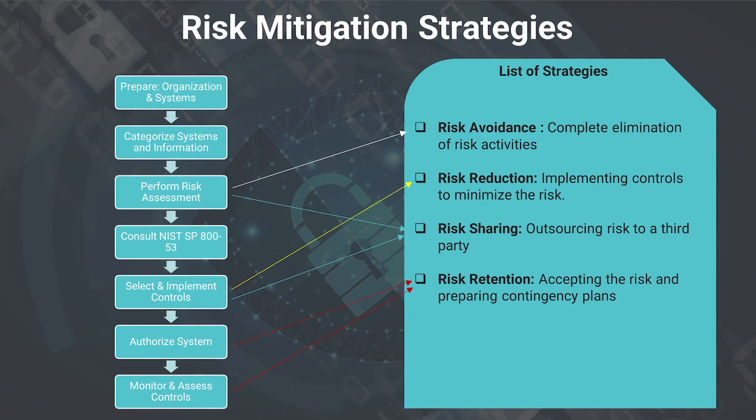Section 3 focuses on risk assessment and management. It helps you understand the risk management framework within NIST SP 853, gives you an overview of risk methodologies and associated tooling, and talks about risk mitigation strategies and control selection based on risk levels.